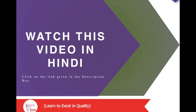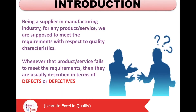Let us start the training. Being a supplier in the manufacturing industry for any product or service, we are supposed to meet requirements with respect to quality characteristics. Failure to meet those requirements is usually described in terms of defects or defectives, which means something is wrong — either it doesn't work like it is supposed to or it doesn't look like it is supposed to.